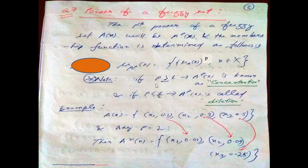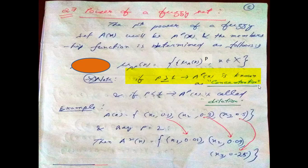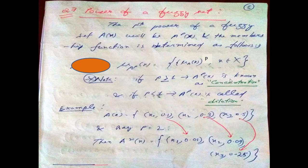Now there are two important conditions that you need to remember. If P is greater than or equal to 1, like 2, 3, 4, then A to the power p(x) is known as concentration. And when P is less than 1, it is known as dilation.